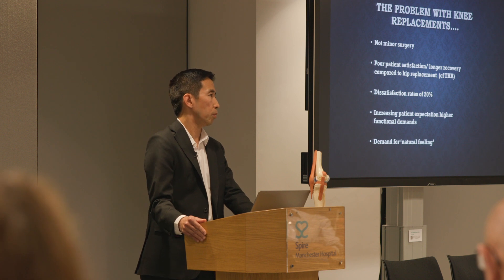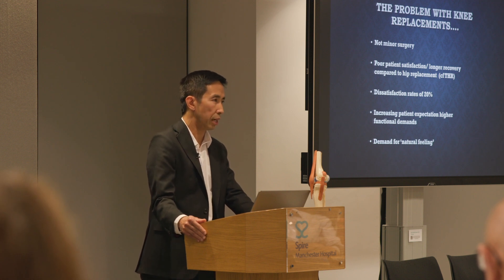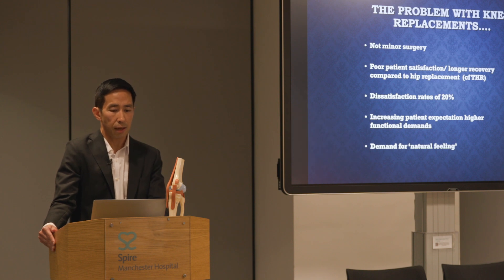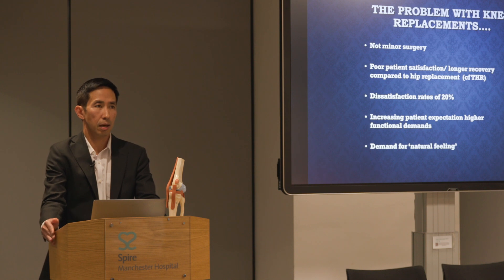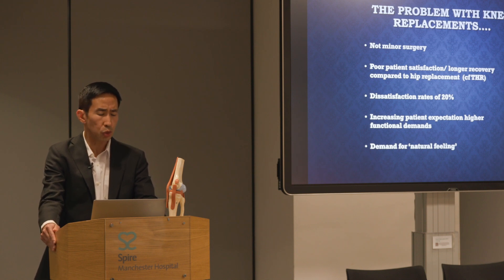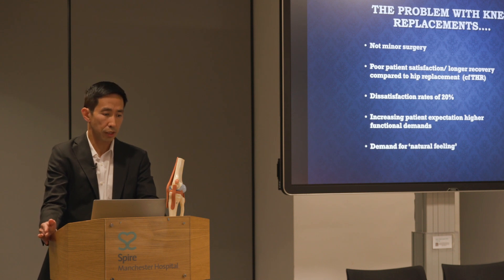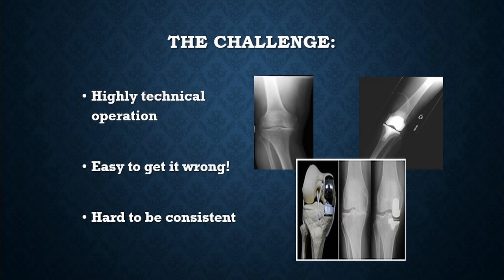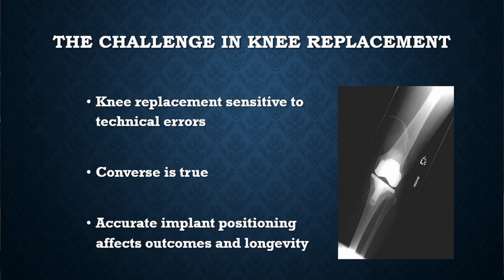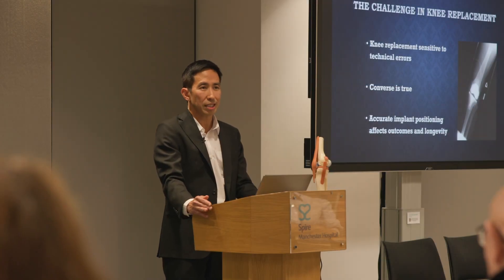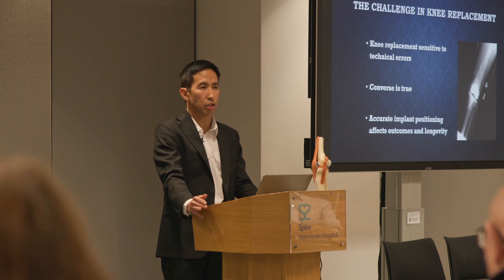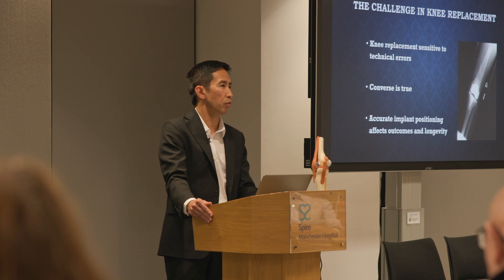This 20% dissatisfaction rate has been a major driver behind research to improve outcomes. Is it due to poor design, poor materials, poor rehab, or poor function of the knee? We are beginning to understand the factors behind poor outcomes. Patients' expectations are also increasing — there is a demand for a knee that not only is pain-free, but feels normal. A knee replacement is a highly technical operation and it's easy to get it wrong. But we understand that if you position the implant accurately and precisely, you get better pain relief, better function, better quality of life, and a greater potential for a joint that feels normal.